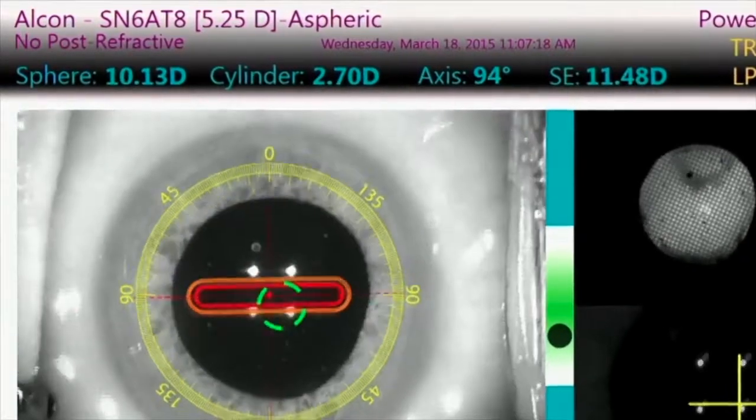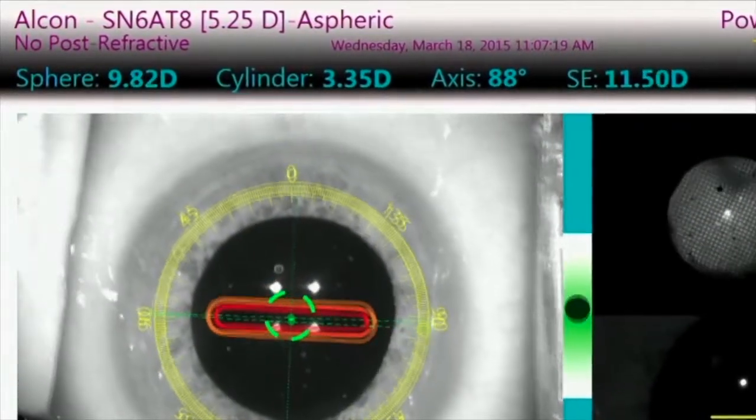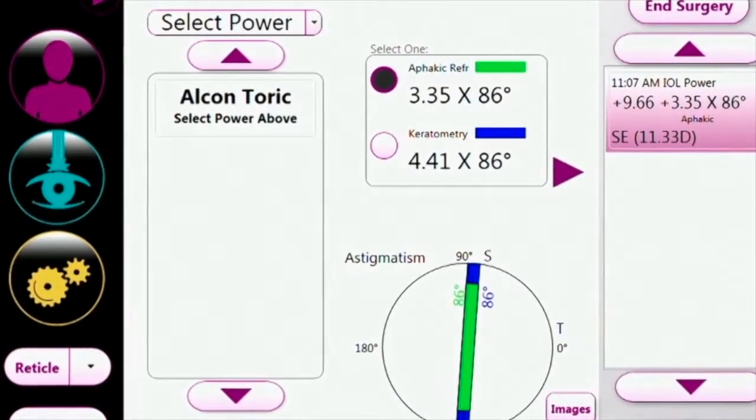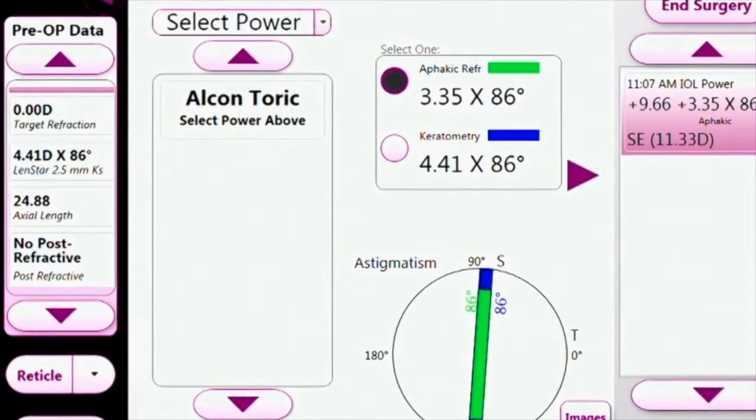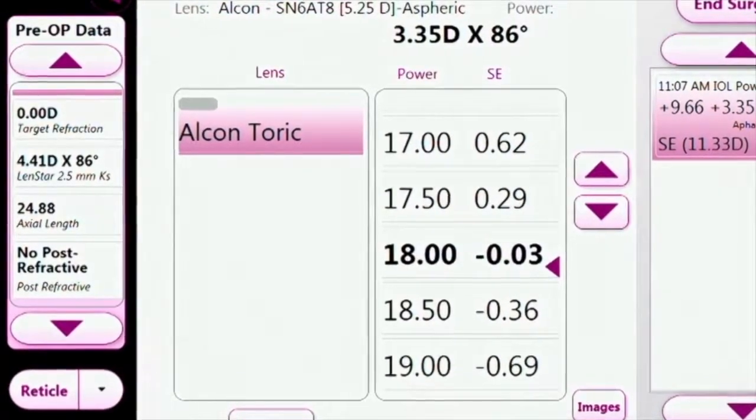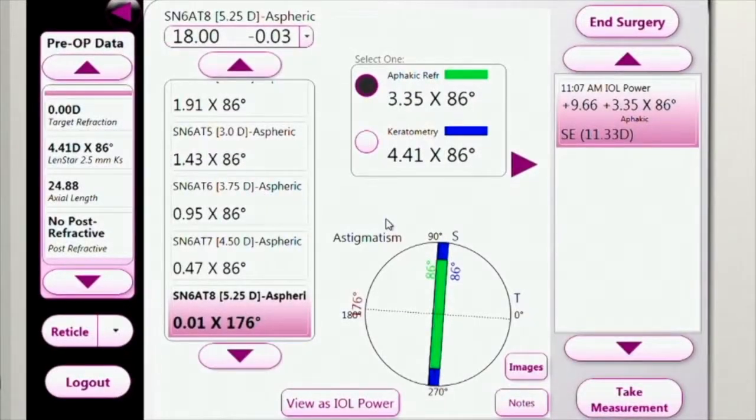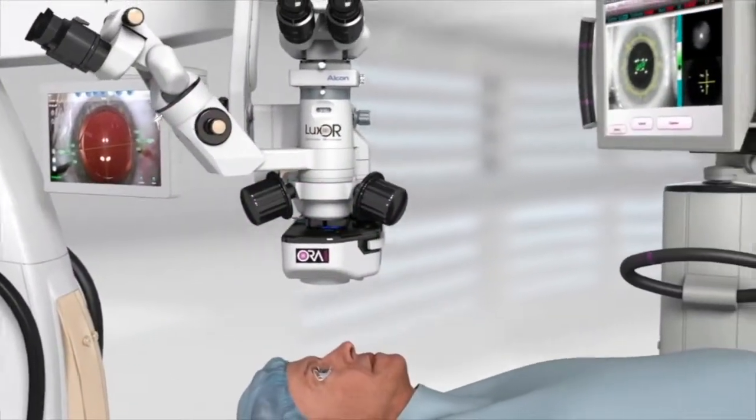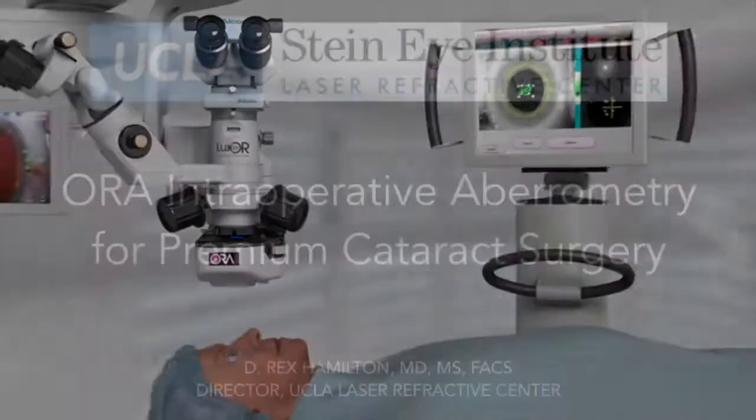The system then will calculate what the lens power should be that I will then select and place into the eye to replace the cataract. These measurements are very detailed and allow us to account for astigmatism, as well as to account for the correct power for nearsighted and farsightedness, which will assist us in obtaining the best outcome to provide vision without glasses following cataract surgery.